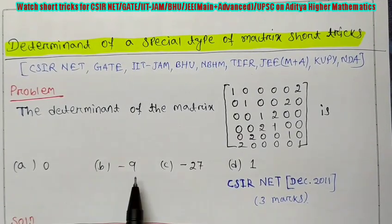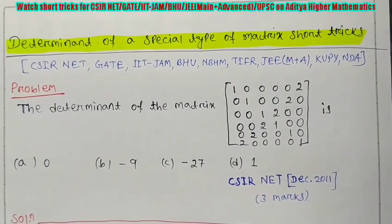And we have to find its determinant. Four options given: 0, minus 9, minus 27, and 1. This question already came in CSIR NET December 2011.